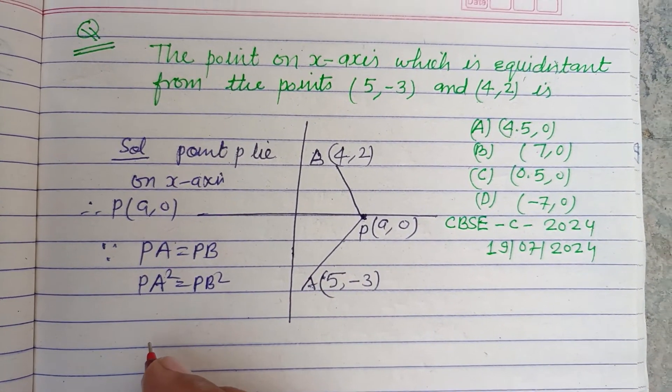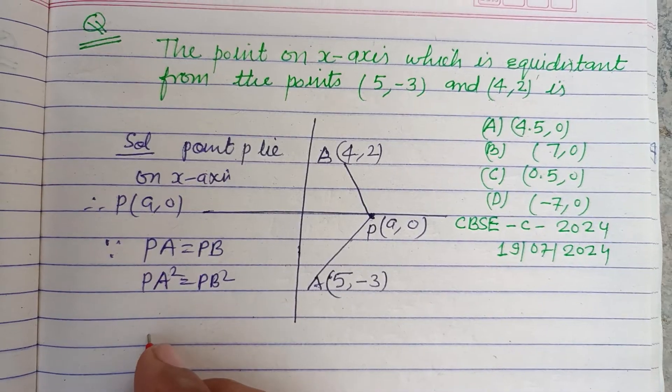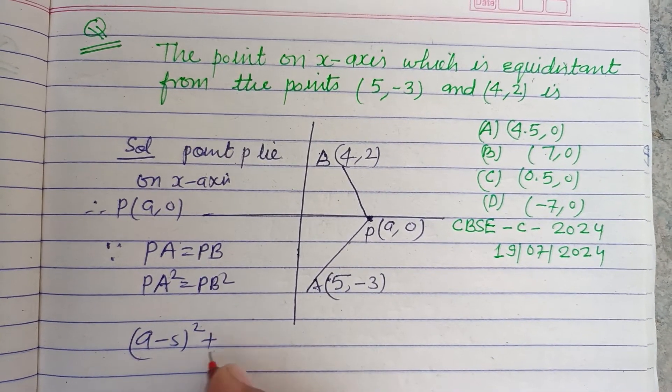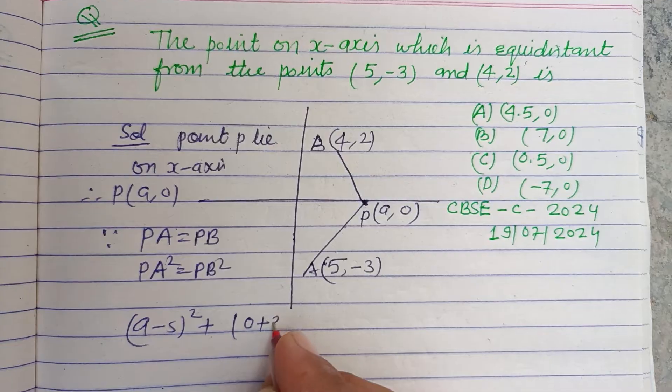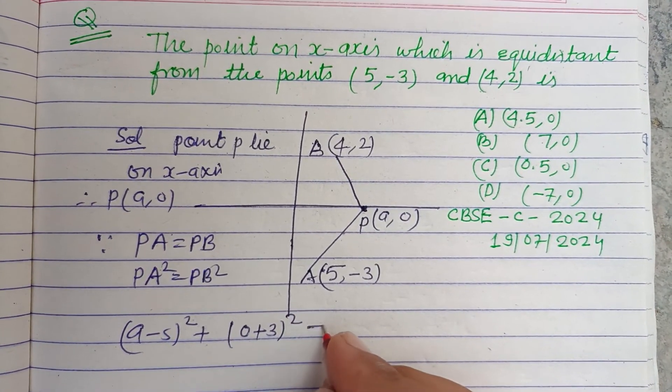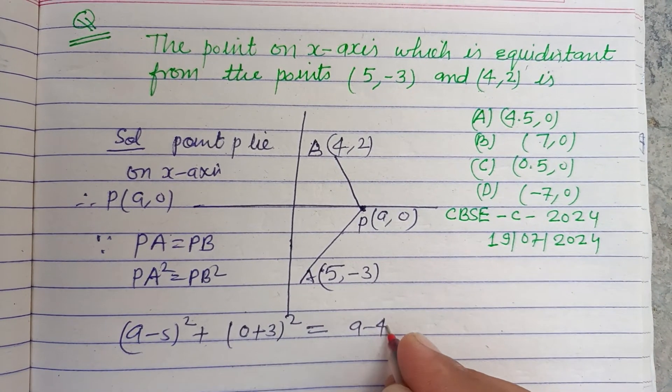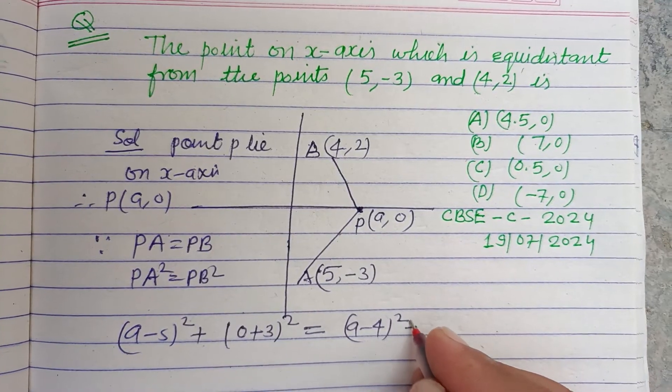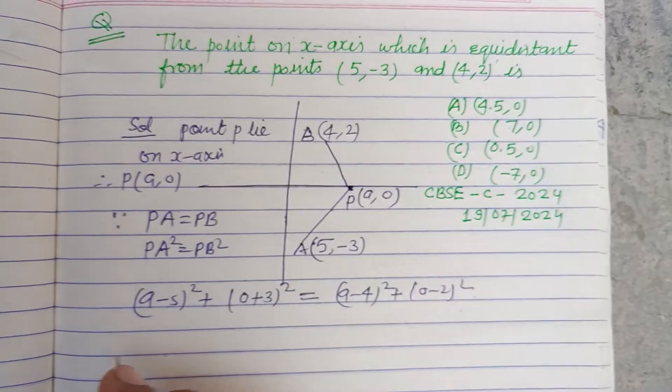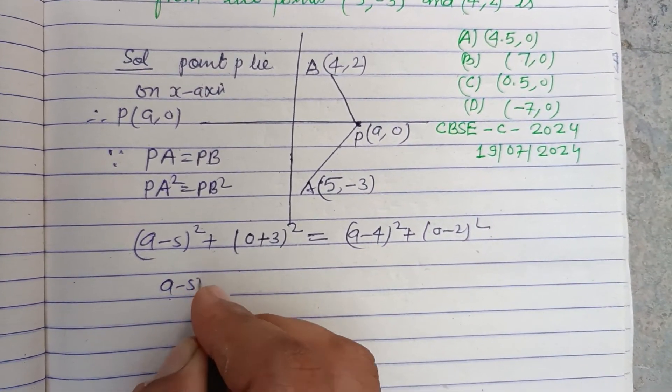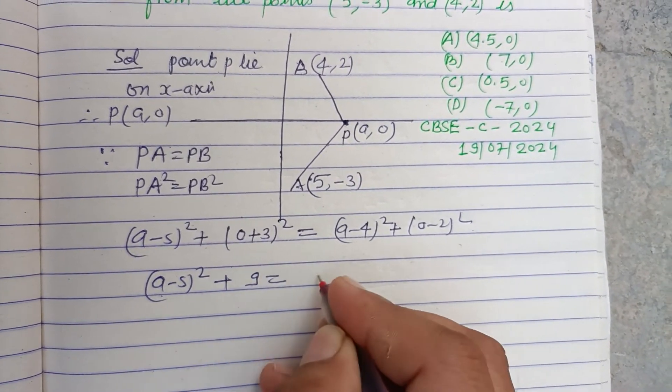Using the distance formula: (a-5)² + (0-(-3))² = (a-4)² + (0-2)². This simplifies to (a-5)² + 9 = (a-4)² + 4.